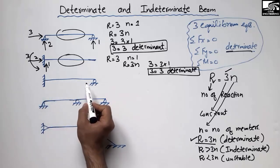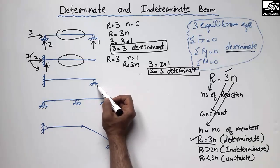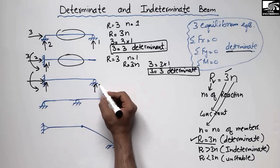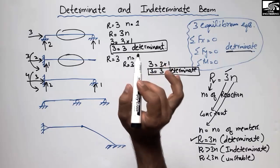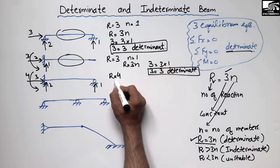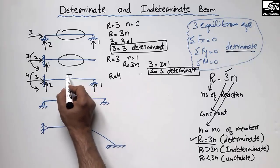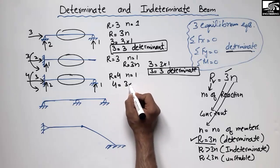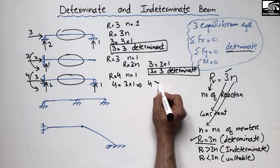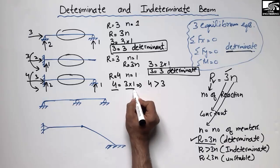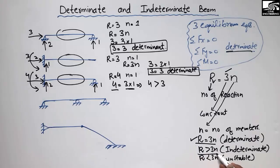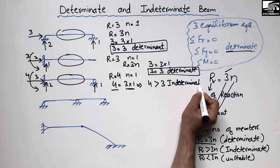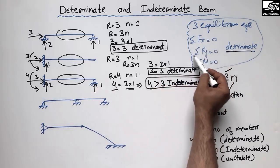Now let's look at a propped cantilever beam having a fixed support and a roller support at the other end. The fixed support provides vertical, horizontal, and moment resistance; the roller provides vertical resistance — giving reactions one, two, three, and four. So R = 4, N = 1. Plugging in: 4 versus 3 × 1 = 3. Four is greater than three, meaning R > 3N, so this beam is indeterminate and cannot be solved with just the three equilibrium equations.